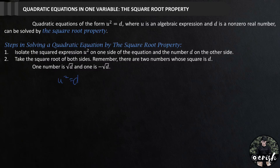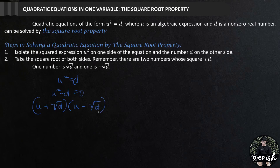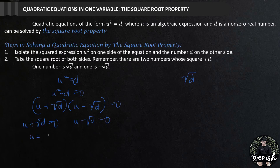Like in factoring, we move all non-zero terms to one side and obtain zero on the other side. So this is u squared minus d equals zero. When we factor this out, we get u plus square root of d times u minus square root of d. Setting each factor equal to zero, we get u plus square root of d equals zero and u minus square root of d equals zero.